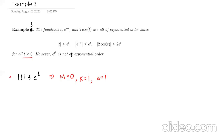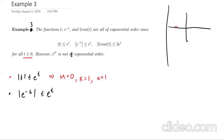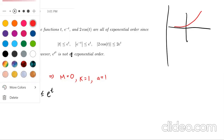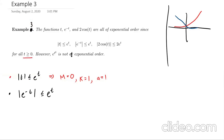Now let's look at e to the negative t. I'm saying that this is less than or equal to e to the t, and this is obviously true — you can see it graphically. One graph grows like e to the t, and the other decreases like e to the negative t. You can clearly see that e to the t is always greater than or equal to e to the negative t in absolute value. Since this works for all t greater than or equal to zero, m equals zero, k is one, and a is one.